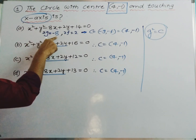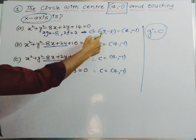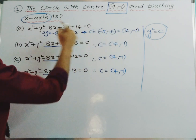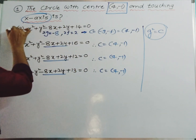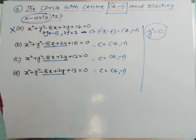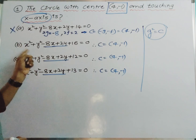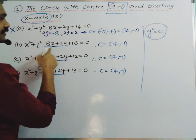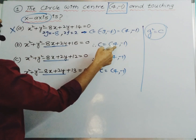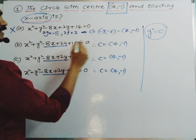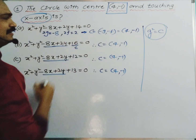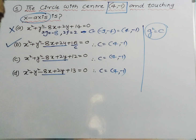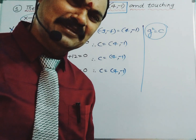Here 2g is minus 8, so -g is 4, meaning g² is 16. But c equals 14, so 16 ≠ 14 — this is wrong. Coming to the second option: g² is 16 and c is also 16. Here it is satisfying. So option B is correct. Very simple question.